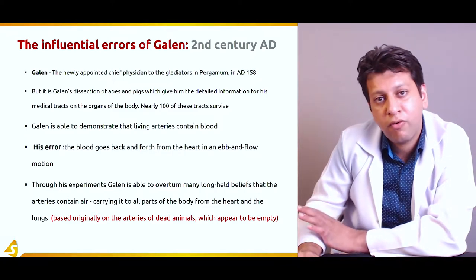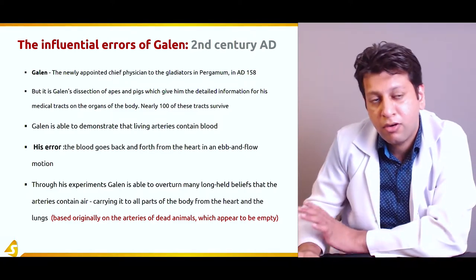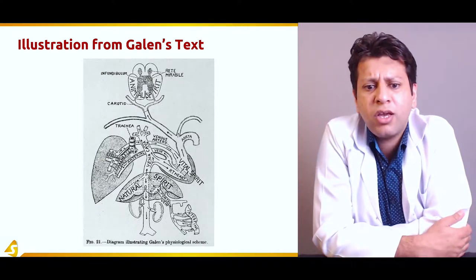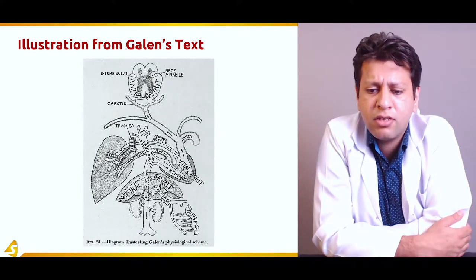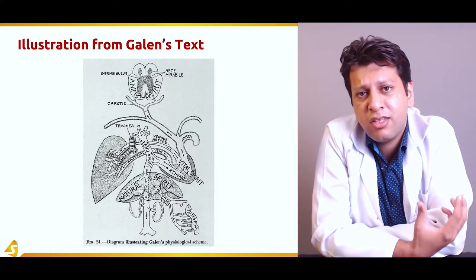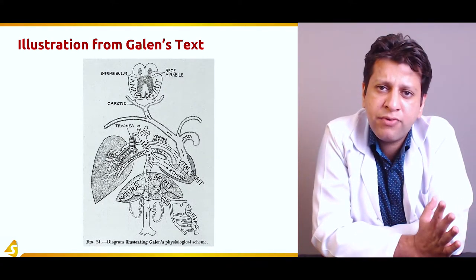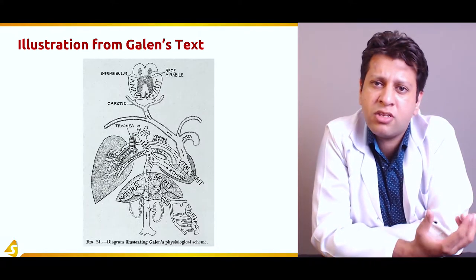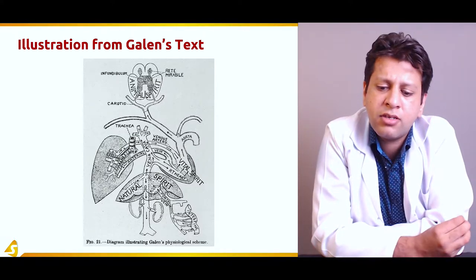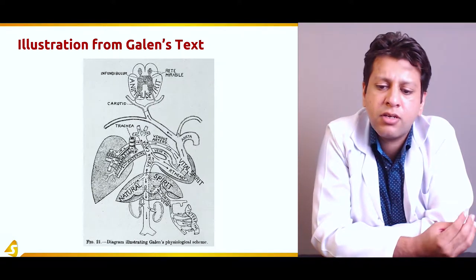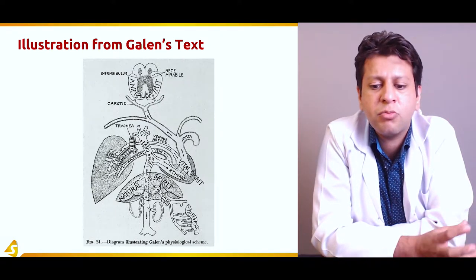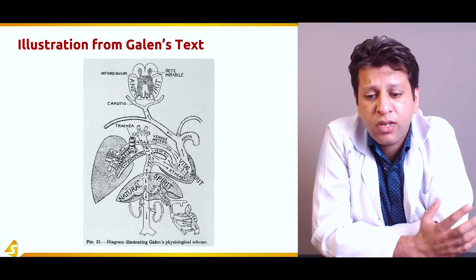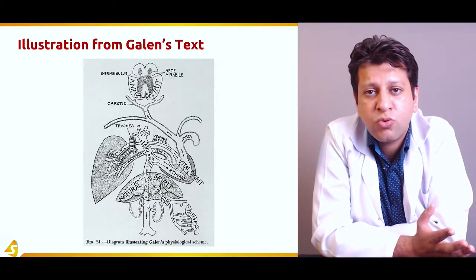This diagram shows an illustration from Galen's text. As you can see, they had not yet perfected the science of anatomy — they still believed there was a spirit residing somewhere, a natural spirit, and an animal spirit which lies in the brain. Since his work was mainly on apes and pigs, the anatomy shown is totally different from what we see in human anatomy.